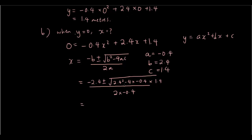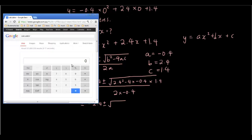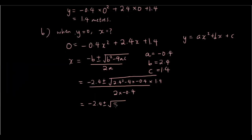So putting these numbers in the calculator I have negative 2.4 plus or minus the square root of 2.4 squared minus 4 times negative 0.4 times 1.4. And the answer is 8 so inside the square root we have 8 over 2 times negative 0.4 well that's negative 0.8.